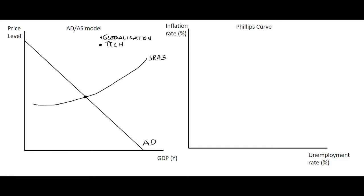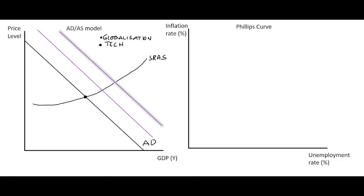So for example, if aggregate demand increases rightwards here, and rightwards again — shifting to the right, showing increases in aggregate demand and increases in spending in the economy — what this shows is that the impact on prices is actually quite small. The equilibrium goes from point A here to B and to C.